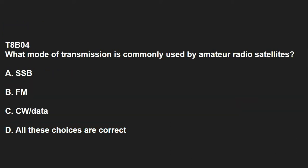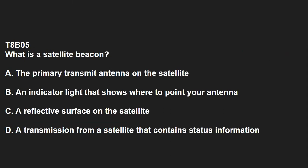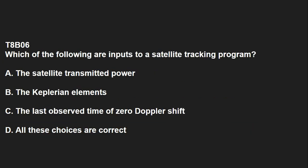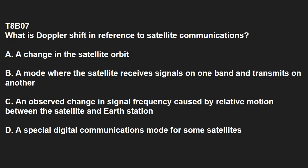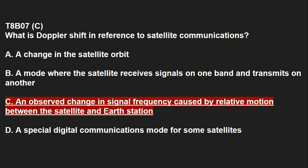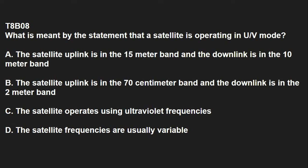T8B04: What mode of transmission is commonly used by amateur radio satellites? That is SSB, FM, or CW and data — so all of these choices are correct. T8B05: What is a satellite beacon? A transmission from a satellite that contains status information. T8B06: Which of the following are inputs to a satellite tracking program? The Keplerian elements. T8B07: What is the Doppler shift in reference to satellite communications? That is C, an observed change in signal frequency caused by relative motion between the satellite and Earth station. T8B08: What is meant by the statement that the satellite is operating in UV mode? The satellite uplink is in the 70 centimeter band and the downlink is in the 2 meter band.